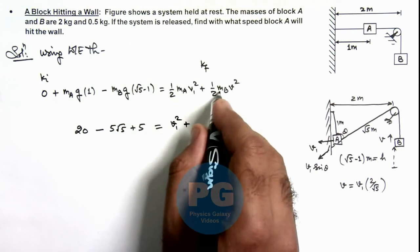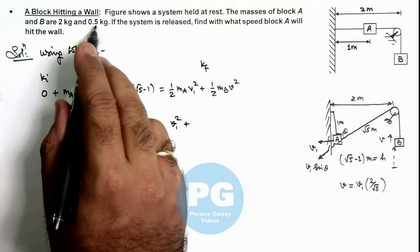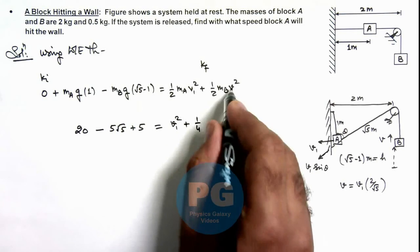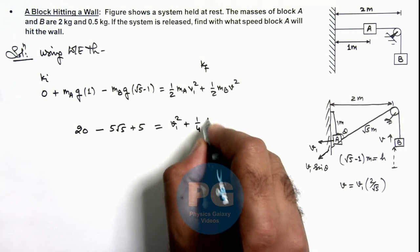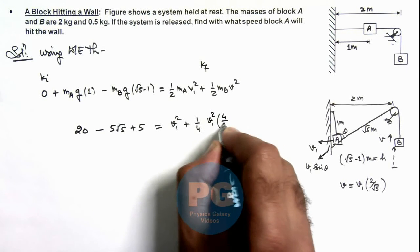Plus mass of block B is 0.5, so this will be 1 by 4, and v we can substitute as v1 multiplied by 2 by root 5, so this is v1 square multiplied by 4 by 5. So here this 4 gets cancelled out.